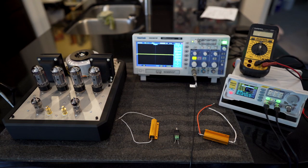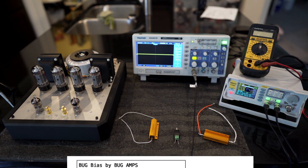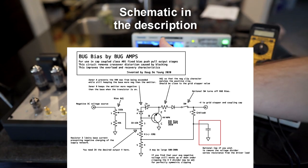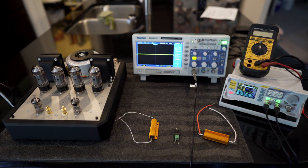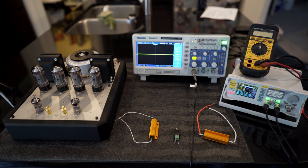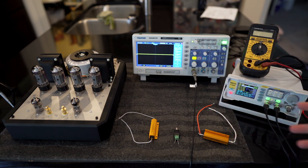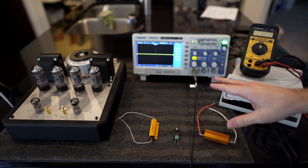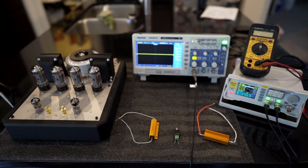Hi, this is Doug again for Bug Amps, and this is going to be a follow-up video to the previous video about the bug bias that stops the blocking distortion. I've just finished up this amp - it's a push-pull 6V6 amplifier that is capacitively coupled AB1 fixed bias, and I've included the bug bias PCB in it. I've included on the PCB a way to turn bug bias on and off, and today this is hopefully a quick video just to show you what happens when you have a traditional bias and then what happens when you enable the bug bias. We're going to look at the various voltages around the amplifier and the resulting waveform on the oscilloscope.